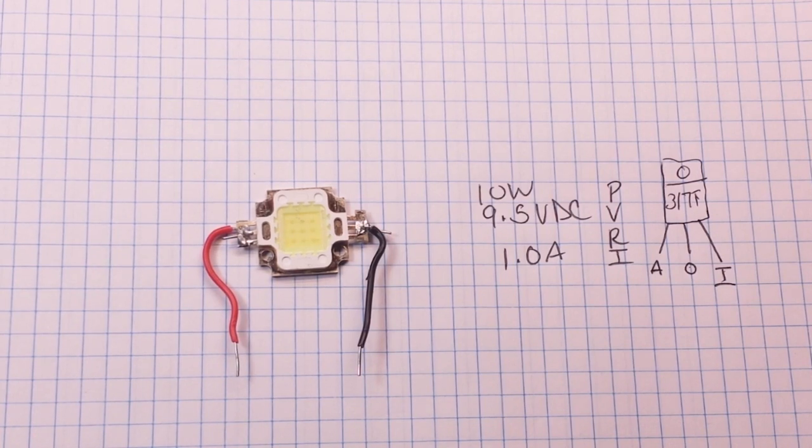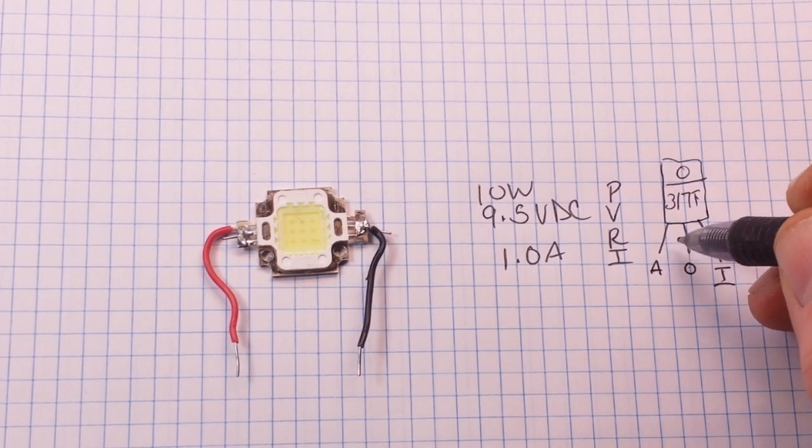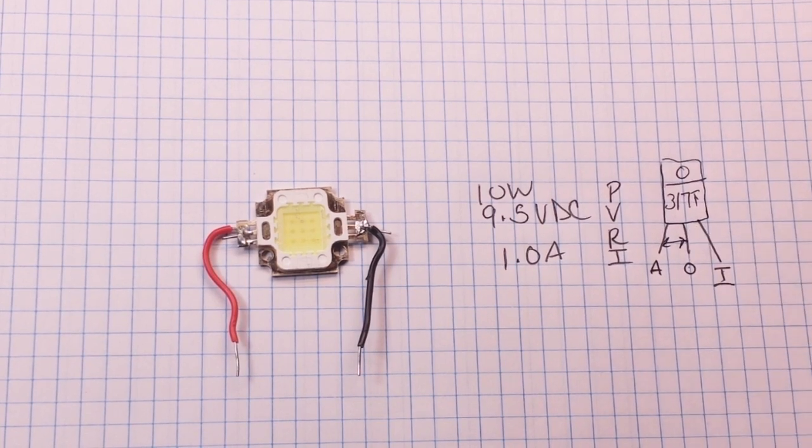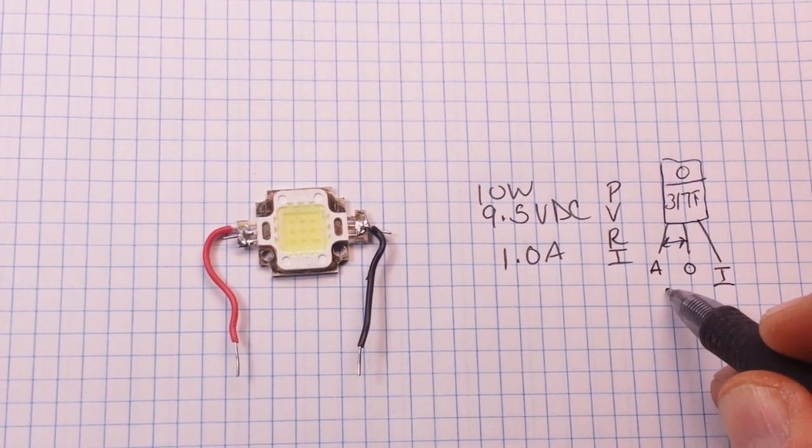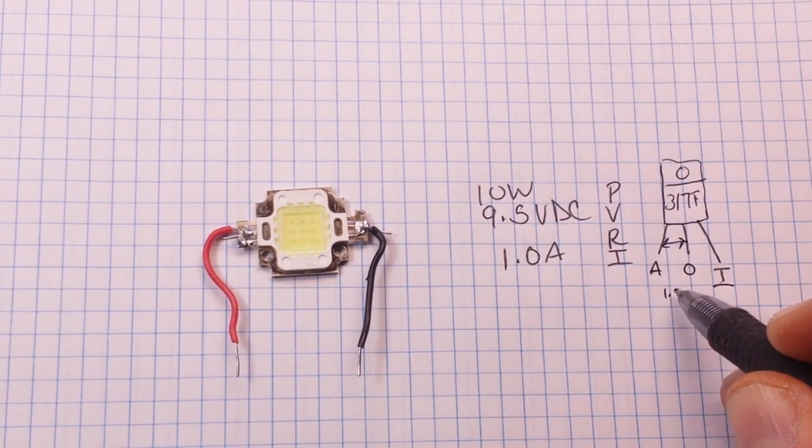All you got to keep in mind is between the adjust and the output, this IC will keep at 1.25.